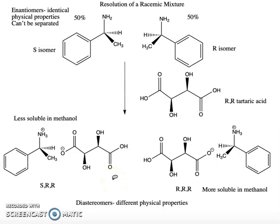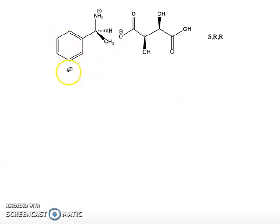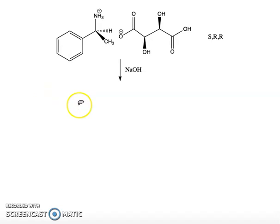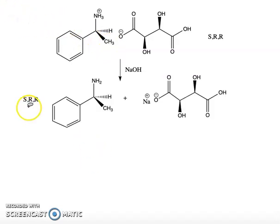After we make these two salts and do our recrystallization, we take our crystals — which are enriched in the S,R,R diastereomer — but we don't want the salt, we want the pure amine back. So we're going to take our salt, which is mostly S,R,R, and react it with sodium hydroxide. The sodium hydroxide removes the extra proton from the amine, giving us the free amine — mostly the S isomer — and the sodium salt of tartaric acid. We add excess sodium hydroxide, so it's probably the disodium salt.